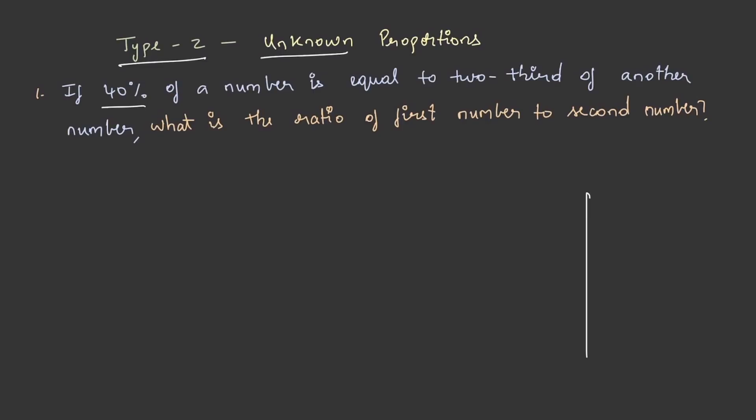If 40 percent of a number is equal to two-third of another number, what is the ratio of first number to second number? Before we solve this question, let us understand what percent is. As the name itself suggests per cent, so cent means hundred. So suppose a percentage of a number is given, then how do you convert it to fractions? That is that number by hundred.